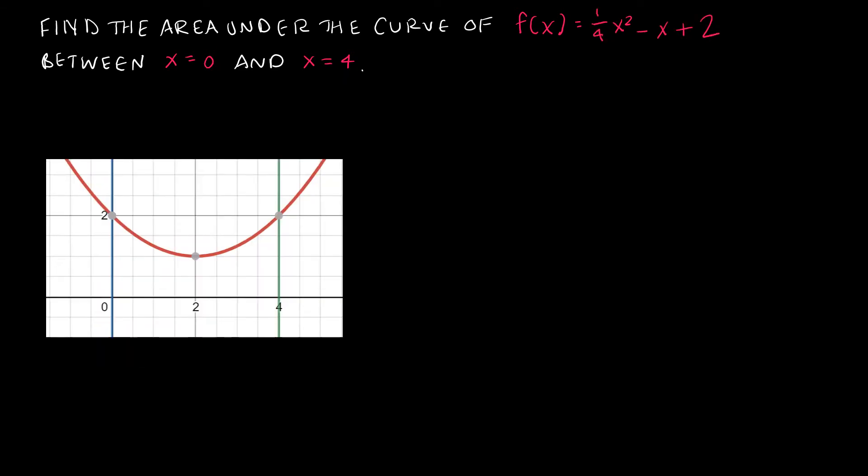Let's try another example. Again we are still just finding the area under the curve. Here our function is a little bit different. Last time we had a negative in front of that leading coefficient which meant our parabola was upside down or pointed downward. In this case we have ¼x² - x + 2, so that ¼ makes our parabola wider, but again because it's positive, notice the parabola is pointing upwards. Again we're using the limits of integration between 0 and 4.